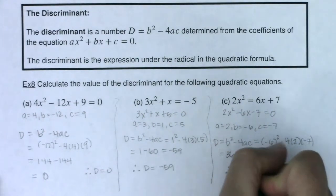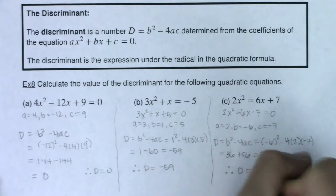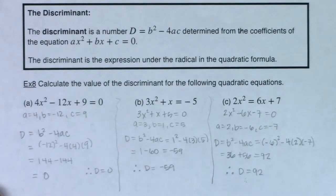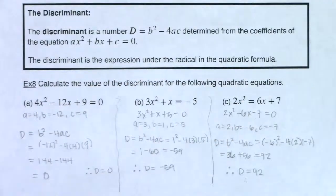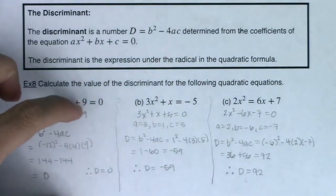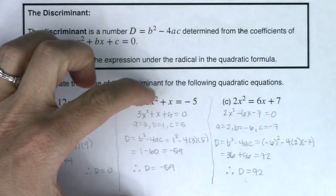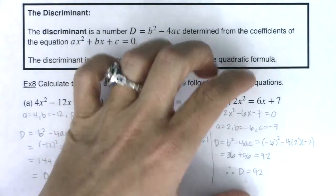So for this last example, for c, I get that my discriminant is 92. So just taking a look at what we have between a, b, and c, I want to point out that here we had a discriminant of 0, here we had a negative discriminant, and here we had a positive discriminant.